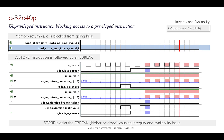Let's look at an issue we do have in CV32E40P: if the memory return valid is blocked from going high, then a store instruction can end up blocking the EBREAK instruction. EBREAK is a higher privilege instruction, but it is blocked from executing because the store instruction is waiting for a memory return valid that never comes in. The property fails, and the app returns a score of 7.9 — a pretty serious vulnerability. This is a deadlock.